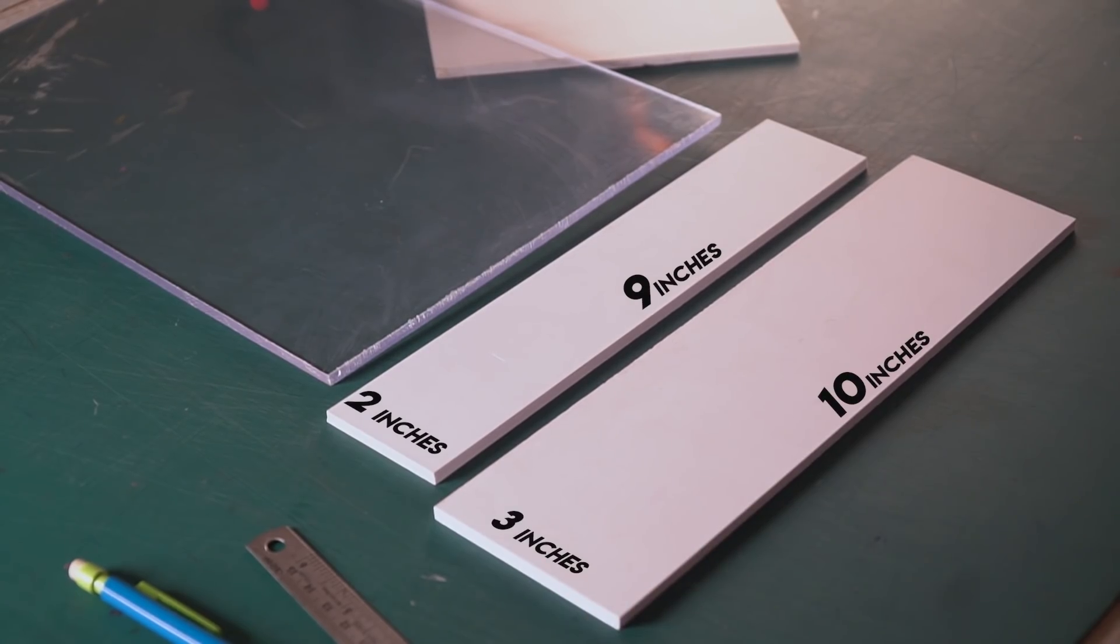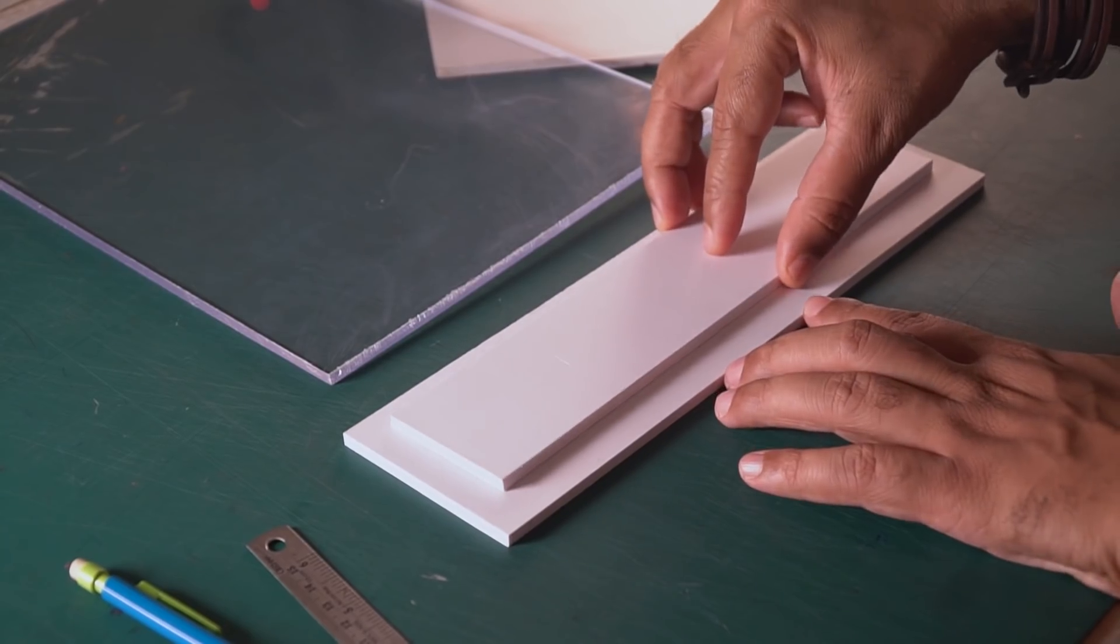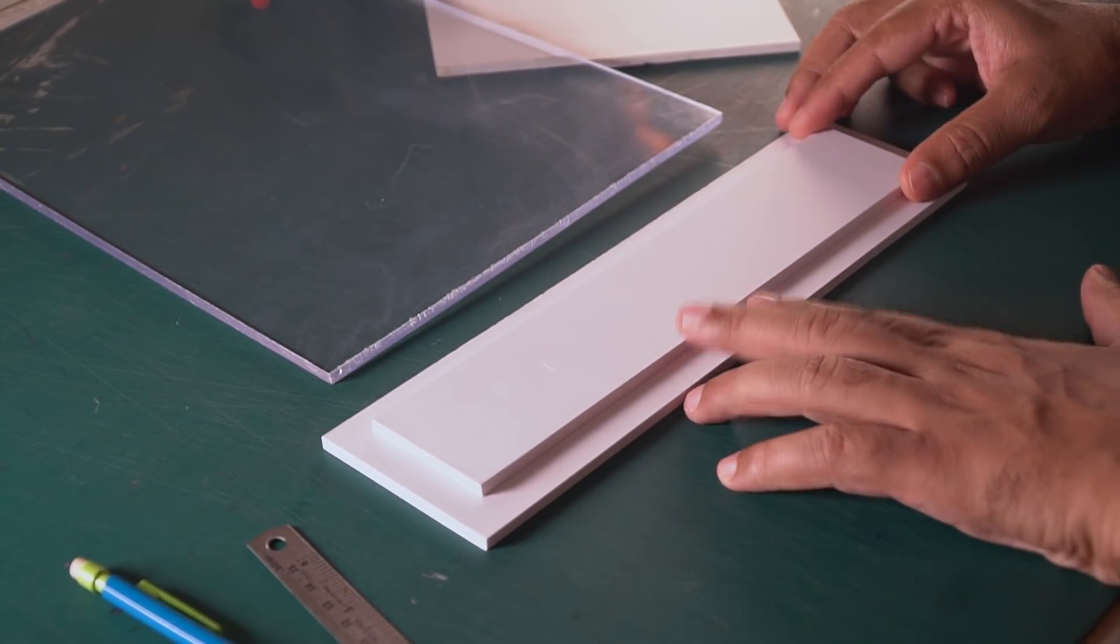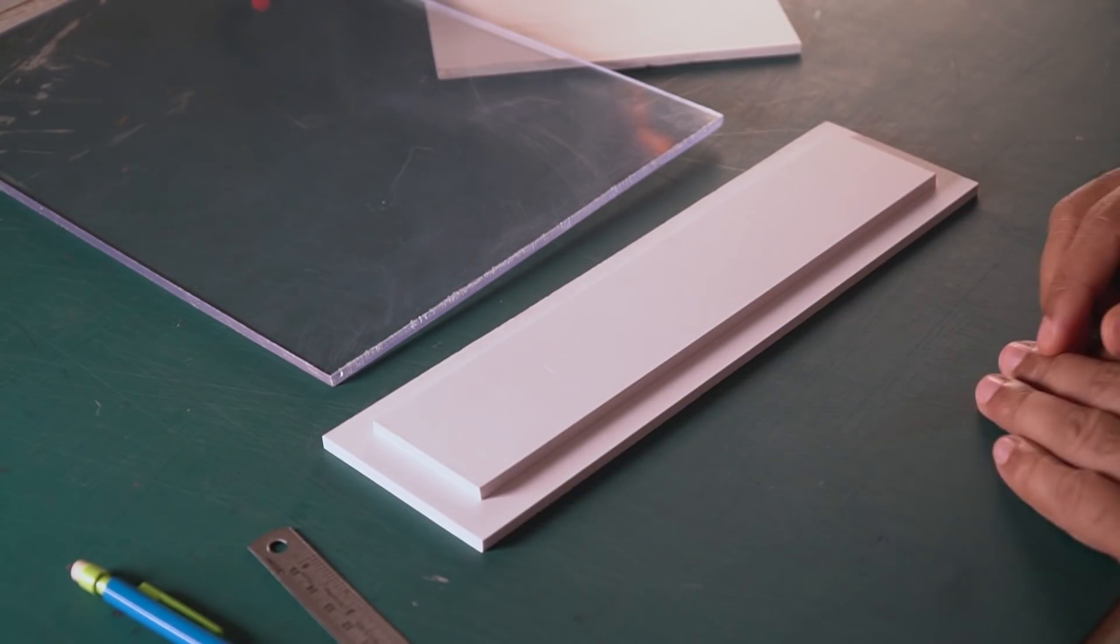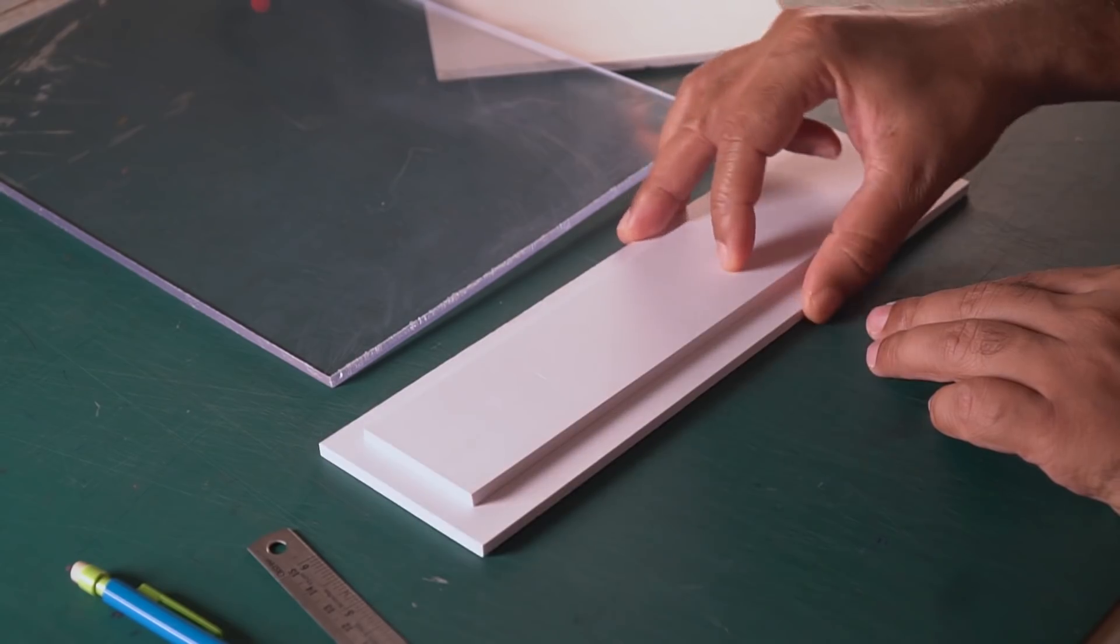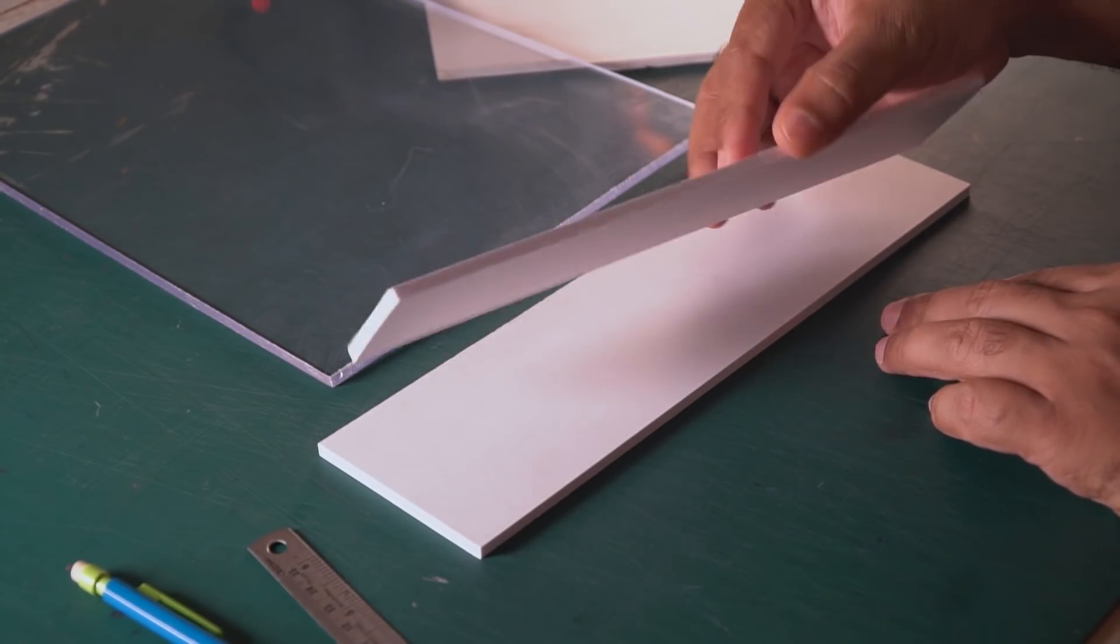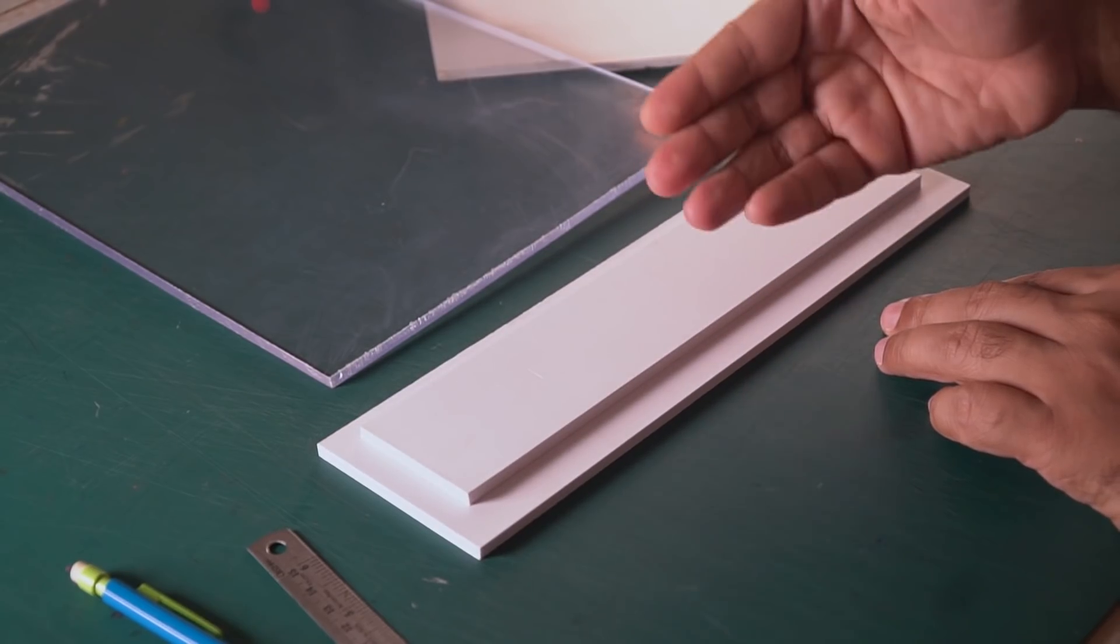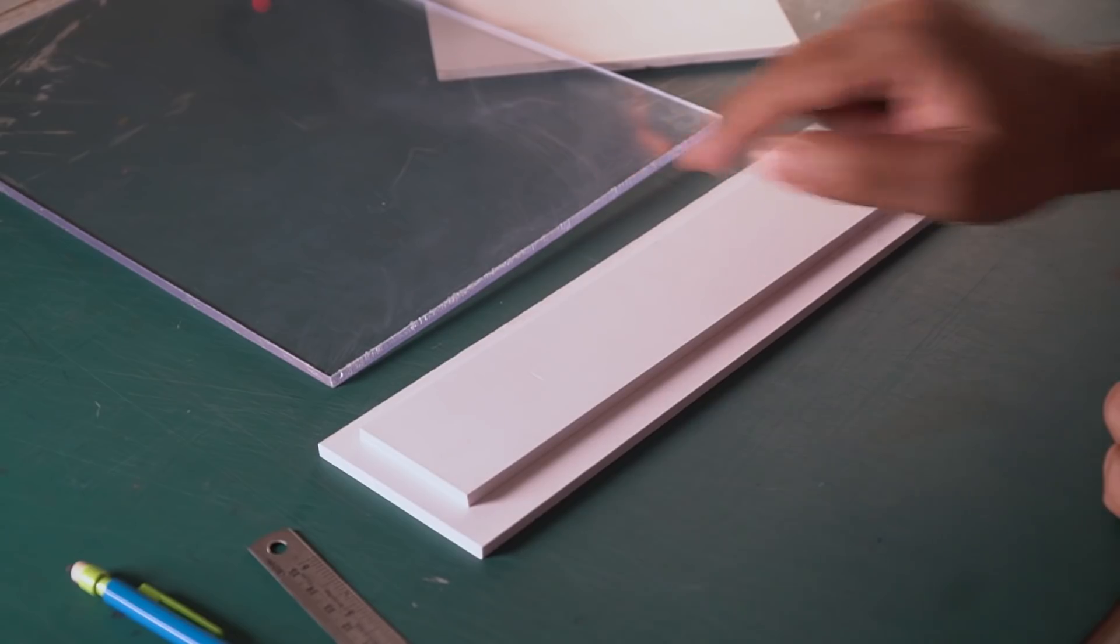This is 10 inches by 3 inches. This is a little variation so that when we make this style, then we stack with a little variation. This is a step variation. It will look interesting. But obviously, these two pieces will not hold our acrylic sheet. Therefore, I will make these two sizes of 3 or 4 pieces so that it will get a little height and it will be easy to hold the acrylic sheet.